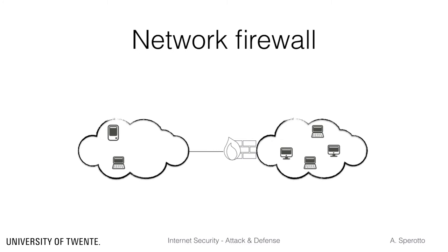A network-based firewall is typically placed at the boundary of the trusted network. It introduces a single checkpoint to perform traffic access control. For example, it might allow internal users to access the web, but it might block shared folders from being accessed from the external network. The main advantage is that a single system protects the entire network, which means that if a vulnerable host joins the internal network, it will be partially protected by the firewall right away.